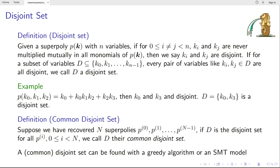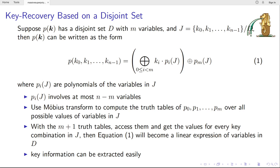For n super-polys, we can define the common disjoint set. If d is a disjoint set for every p_i, a disjoint set or a common disjoint set can be found with a greedy algorithm or SMT model. Suppose p(k) has a disjoint set d with m variables and j equals k_0, k_1, until k_(n-1) except d. Then p(k) can be written as this form. Equation 1.